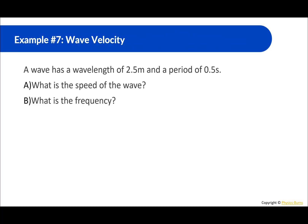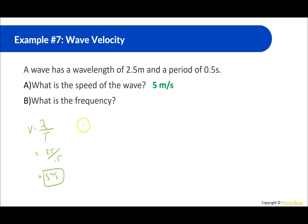A wave has a wavelength of 2.5 meters and a period of 0.5 seconds. What is the speed, and what is the frequency? Velocity equals wavelength divided by period: 2.5 divided by 0.5 equals 5 meters per second. For frequency, frequency equals 1 over period: 1 divided by 0.5 equals 2 hertz.